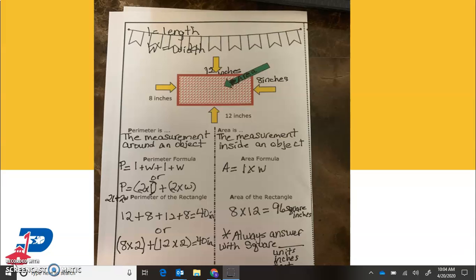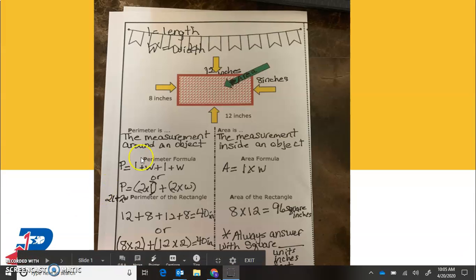So we're talking about perimeter and area. Length has to do with it, but I keep saying it. Perimeter is the measurement around an object.